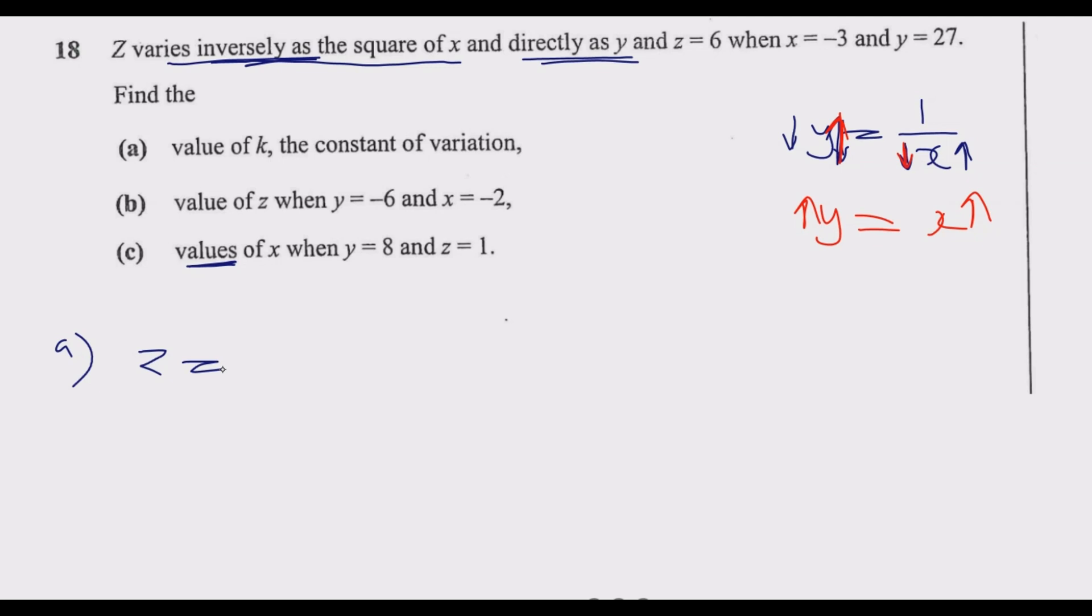Since z inversely varies as the square of x, x will be squared. And direct as y, so y is direct. Then we multiply by the constant k that we're being asked to find.